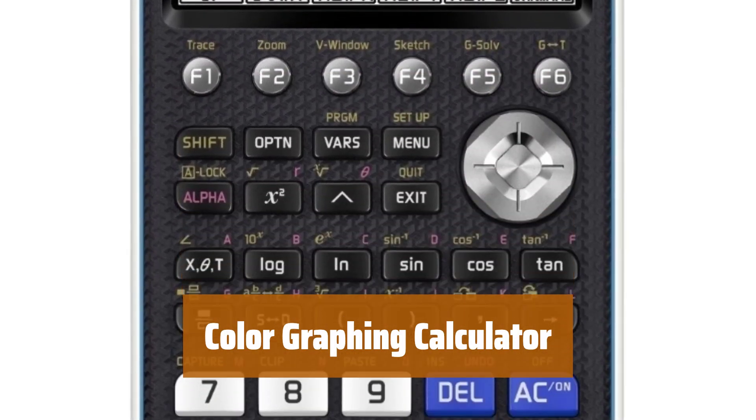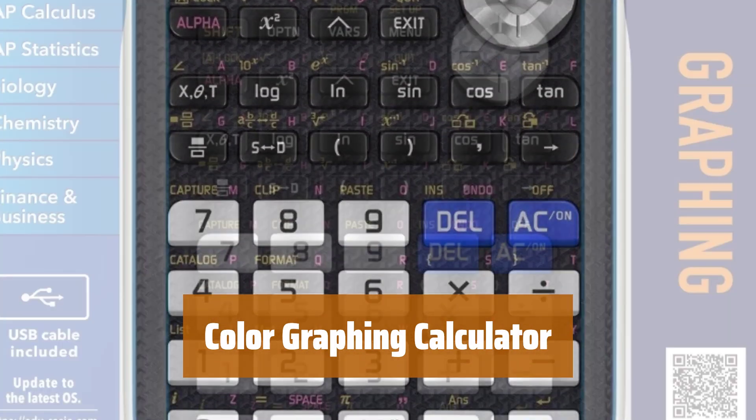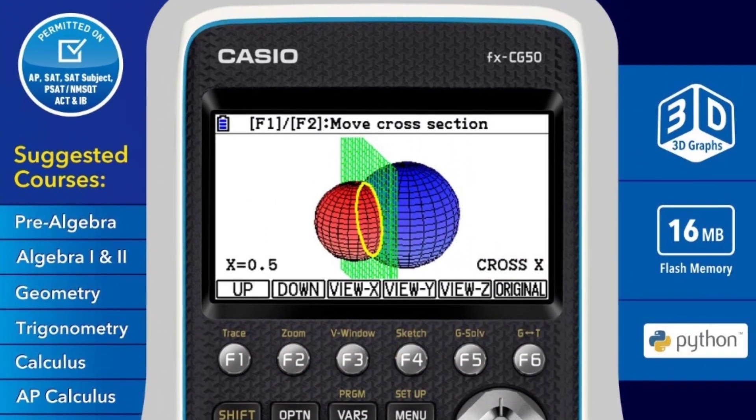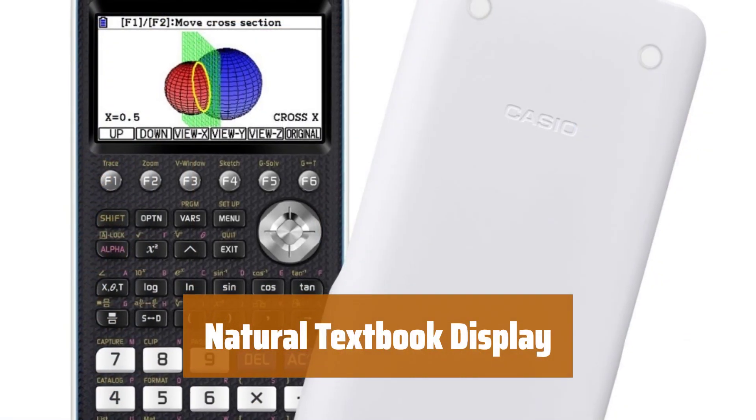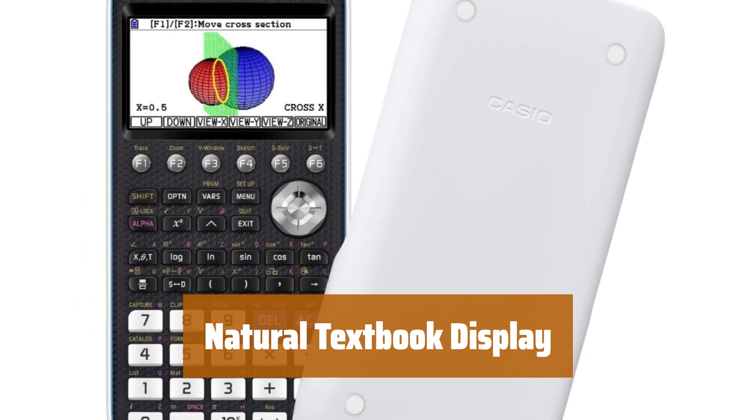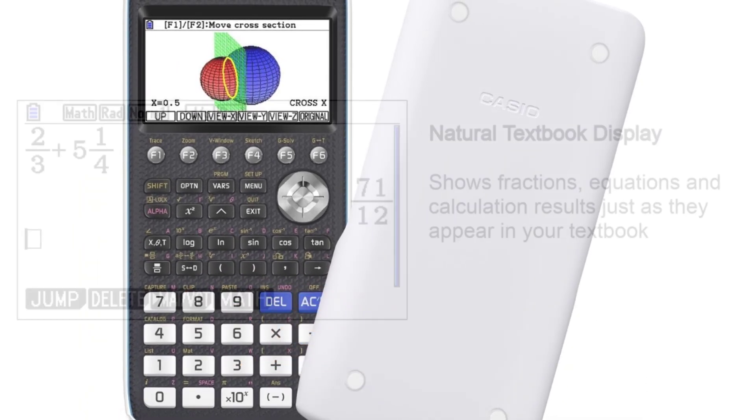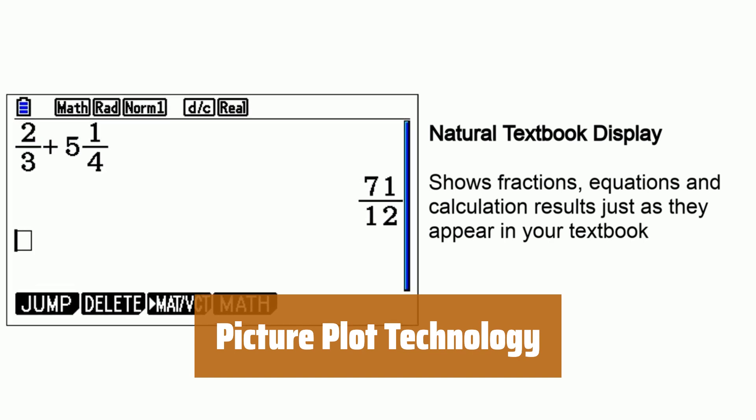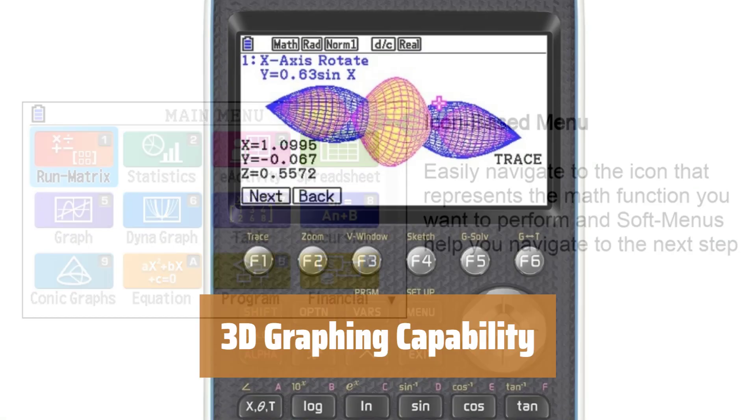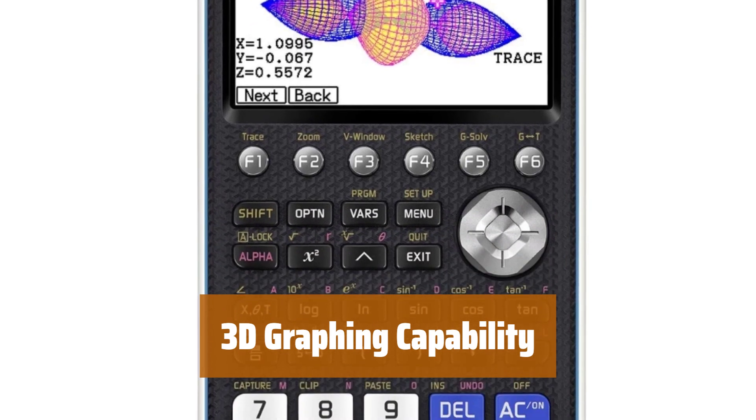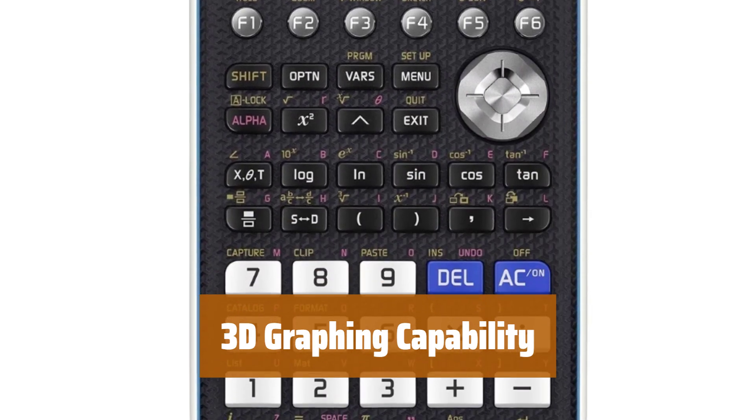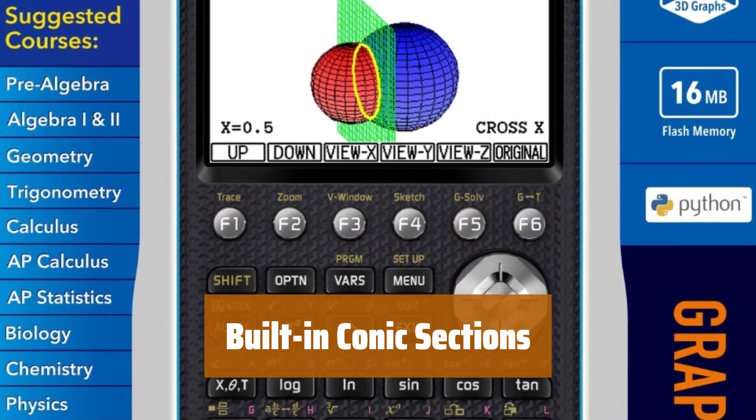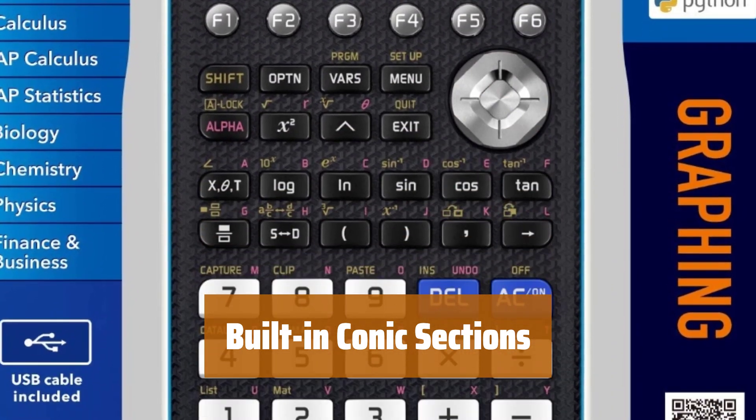Number 4: See your calculations clearly with a high-resolution LCD display that showcases over 65,000 colors. View equations just like they appear in a textbook for easy understanding and study. Visualize your data with real-life images using picture plot technology. Explore graphs in three dimensions for a deeper understanding of mathematical concepts. Access conic sections directly on the calculator for advanced mathematical calculations.